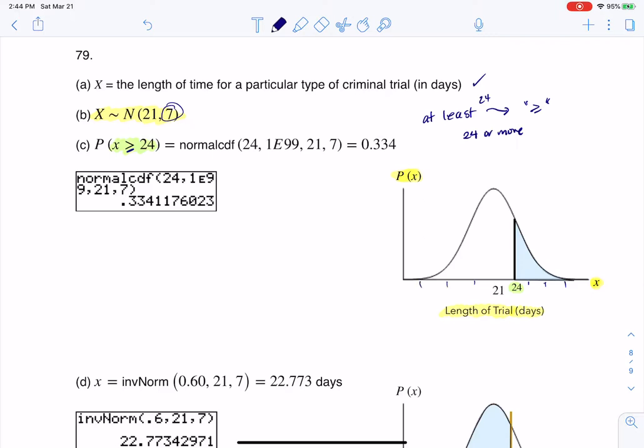And maybe 1, 2, 3 deviations below. If I want 1 deviation above, that would be 21 plus 7 is 28, and then I would be at 35. And then I would be at 42, and then I'd be down here at 14, 7, and 0, something like that. So 24 is going to be wedged in there.